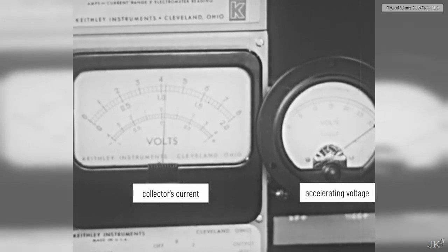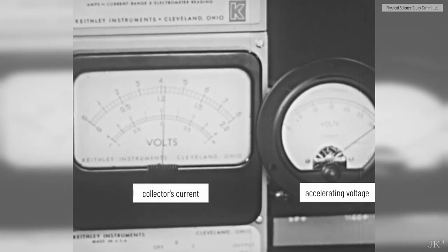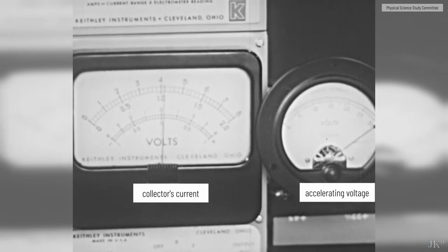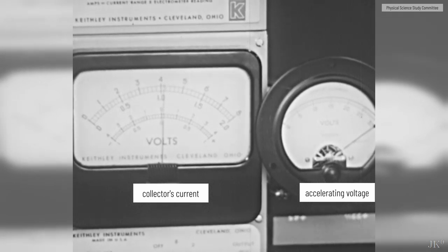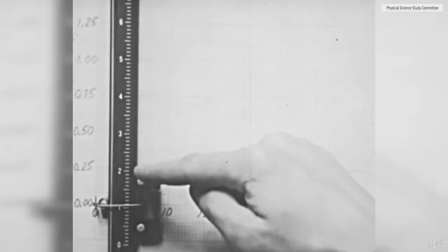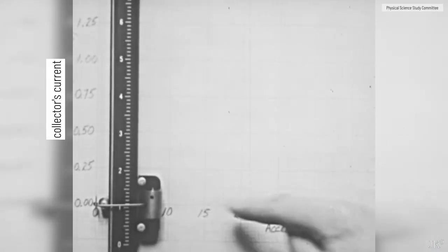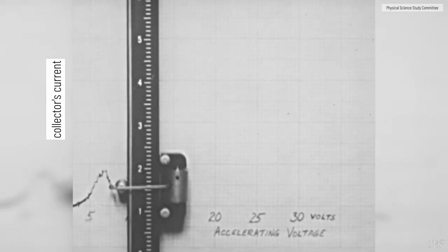In the film, the experiment is repeated, but this time, plotting the collector's current as a function of the accelerating potential. Well now, this really looks interesting. I think we'd better go back and do it again. This time, I would like to use an automatic recording device which will plot the anode current as a function of accelerating voltage. As I further increase accelerating voltage, the current begins to rise. There now starts the first dip.